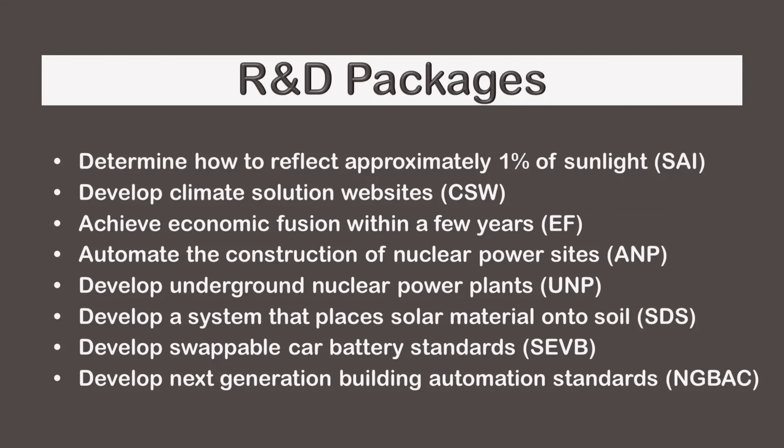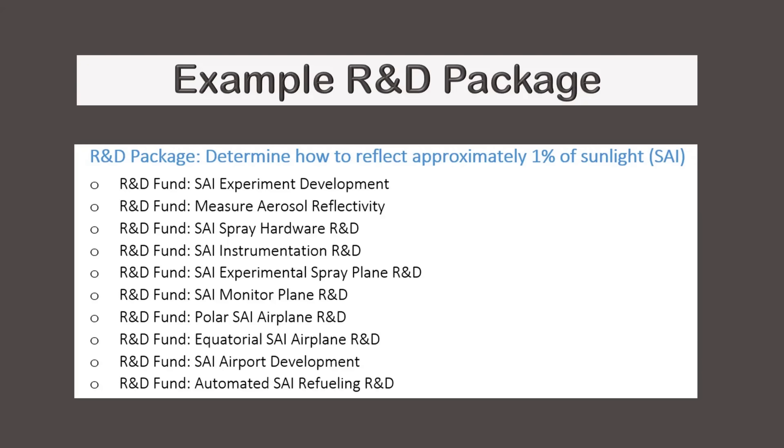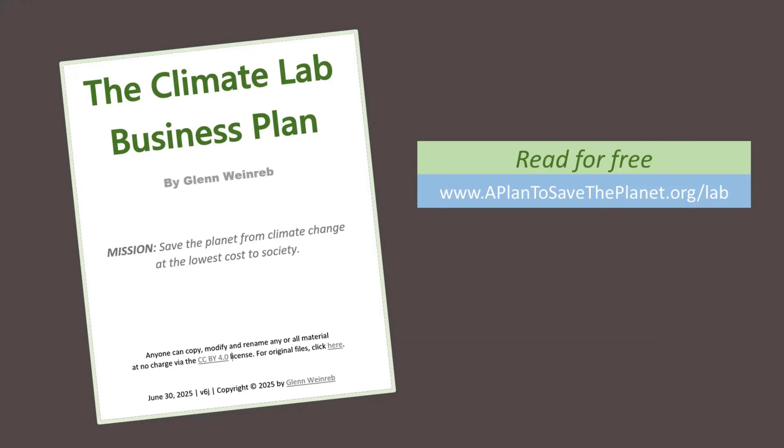Each R&D package can further be divided into focus areas, where each area is supported by an R&D fund. Shown here is an example list of R&D packages, and shown here is an example list of R&D funds inside of one R&D package. Within a climate plan, an R&D budget table can show the cost of each R&D package over time, and a budget table for each R&D package can show the cost of each R&D fund over time. Our lab business plan suggests eight R&D packages with roughly seven R&D funds in each.